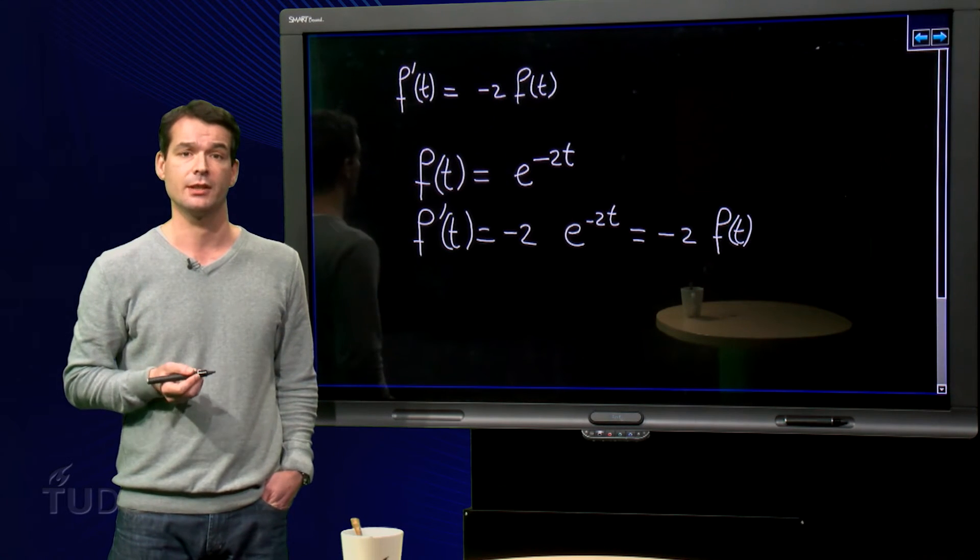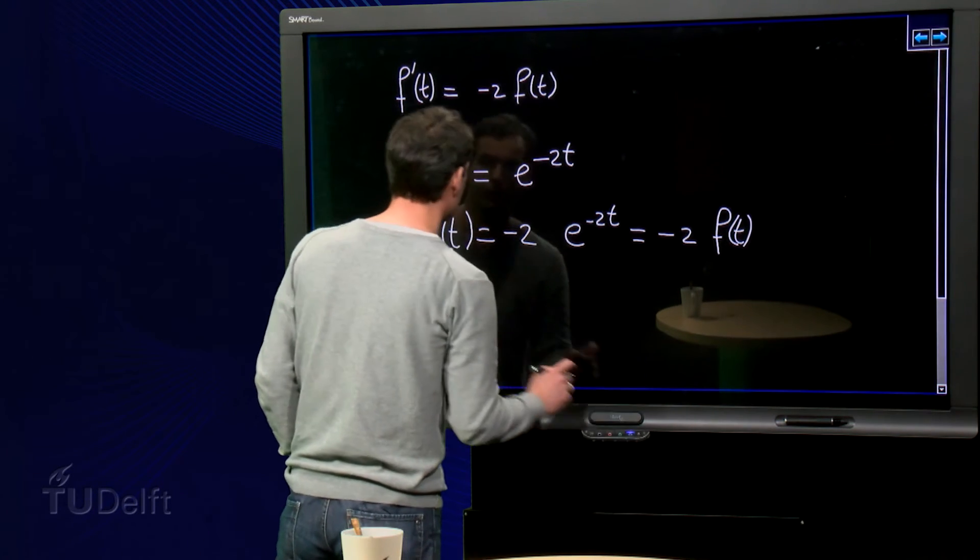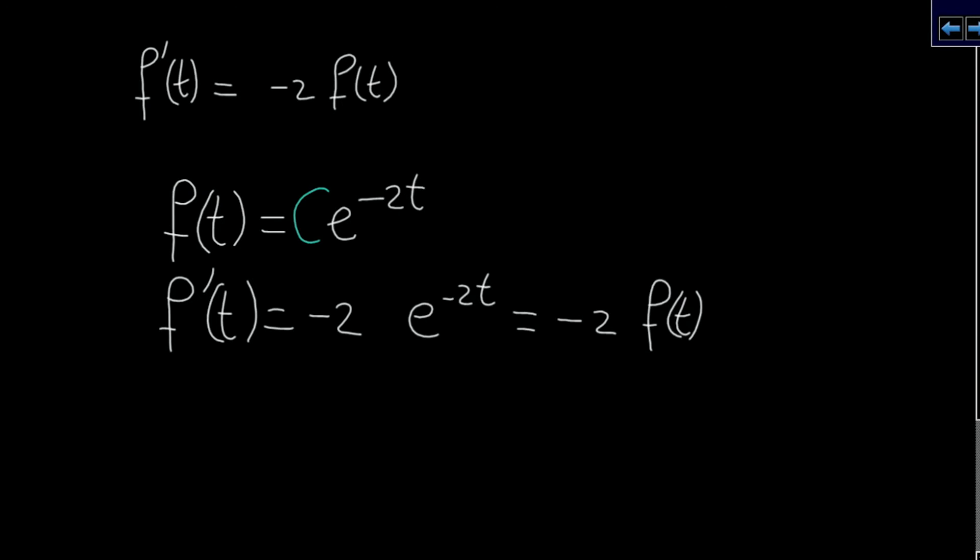We can take f equal to a constant times e to the power minus 2t. So we have f(t) = c times e to the power minus 2t. And now we can check the derivative again.